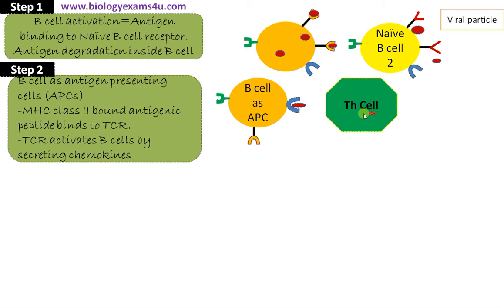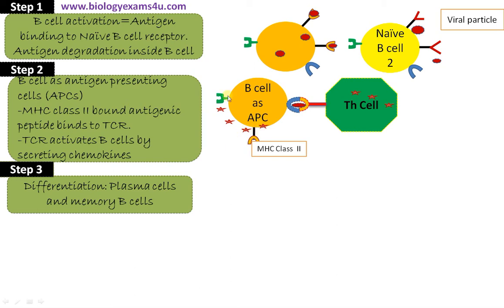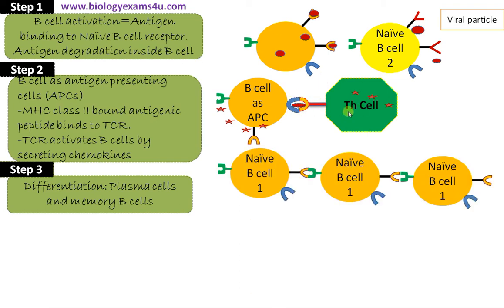T helper cells — the commanders of the immune system — can recognize these MHC class 2 bound antigenic peptides. T helper cells will secrete numerous chemical messengers like interleukins, chemokines, etc., that will activate this particular B cell, and enhanced activation occurs in this T helper cell mediated pathway. The pathogen is degraded and bound to MHC class 2; the MHC class 2 bound antigenic peptide binds to the T cell receptor, and the T helper cell activates the B cell.